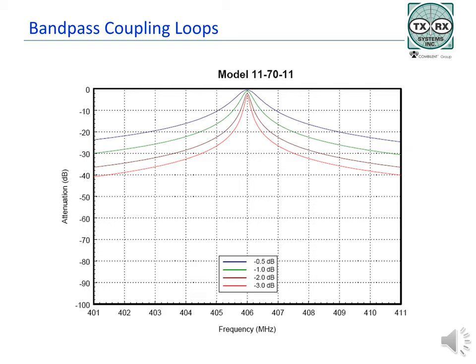A notch or reject cavity has only one loop assembly with both the input and output connectors on the loop plate. A small cover is placed in the unused opening. Nothing should ever be placed in the other hole except the cover plate. The cavity tuning rods are used to adjust the notch frequency of the cavity. The series notch loop has a small capacitor that allows the passband insertion loss to be adjusted. As the capacitor is tuned, the curve will become asymmetrical, giving a steeper curve on one side of the notch frequency or the other.